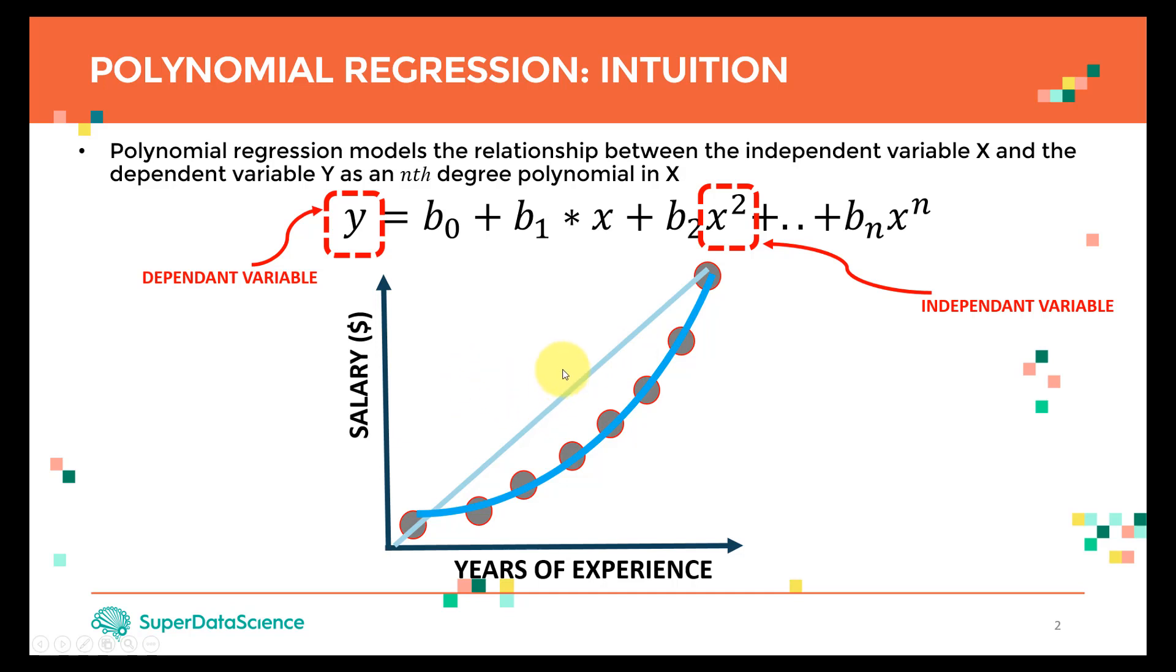The equation is Y equals B0 plus B1 times X. If we stop here, that would be our simple linear regression model. However, for polynomial regression, we add additional parameters. We add B2, another coefficient multiplied by X squared, then we add B3 times X cubed, and so on. We keep adding parameters as much as we could.